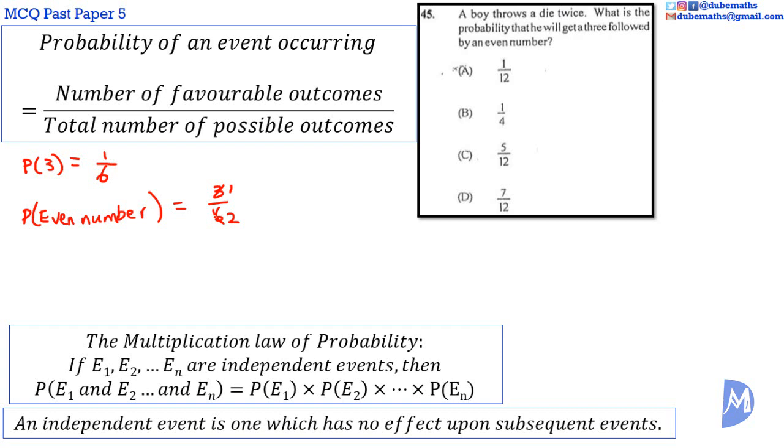Thus, the probability of rolling a three and an even number on the next roll is equal to 1 sixth multiplied by a half. Which is equal to 1 multiplied by 1 is 1, 6 multiplied by 2 is equal to 12.